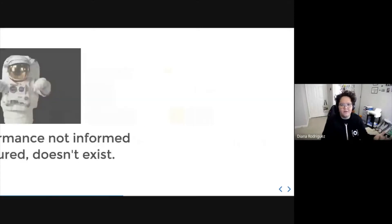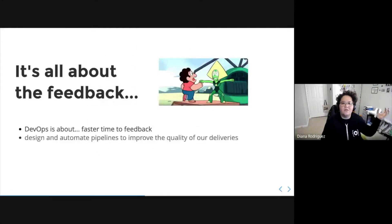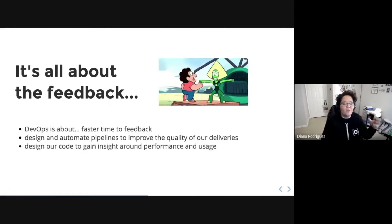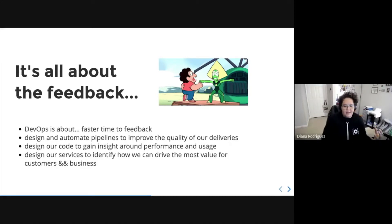From the technical perspective, the DevOps culture is all about feedback — faster time to feedback. With the information we obtain from all different sectors of our ecosystem or pipeline, we can design and automate these pipelines to improve the quality of our deliveries. With that feedback, we can design our code to get insight around performance and usage, and design our services to identify how we can drive the most value for customers and business. The feedback I get and my actions don't only affect my sector — it's a big chain that starts and ends with everybody.